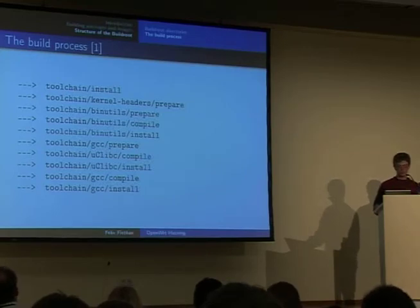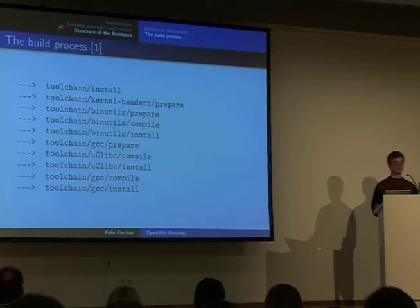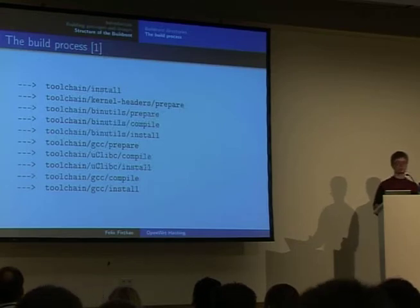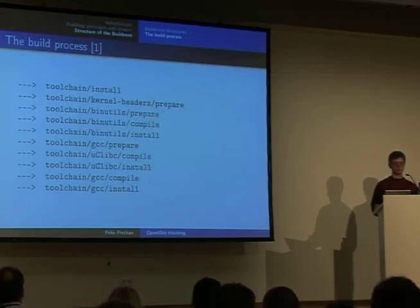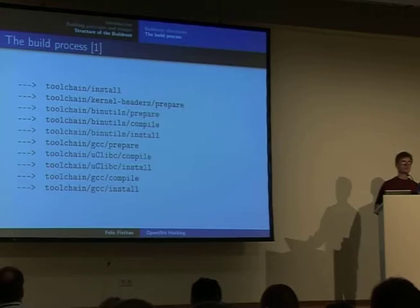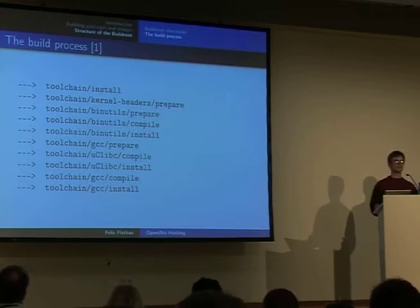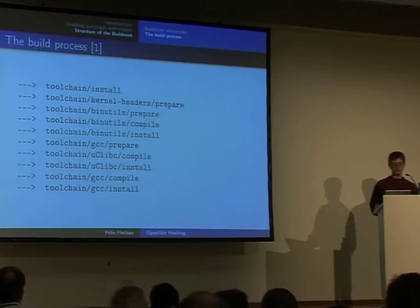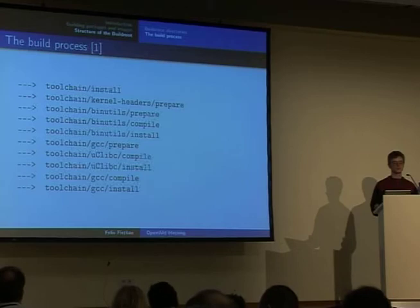So the standard process is: first unpack the kernel headers, then build the binutils, then prepare the GCC. Preparing the GCC means you build the so-called initial GCC — it can only create statically linked executables and is only intended for compiling the C library which we'll use later.